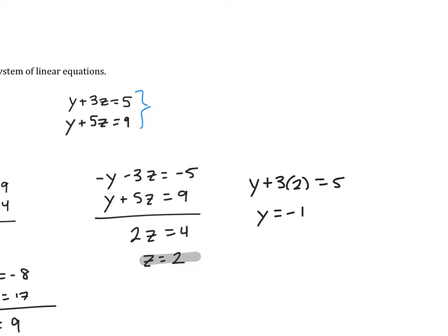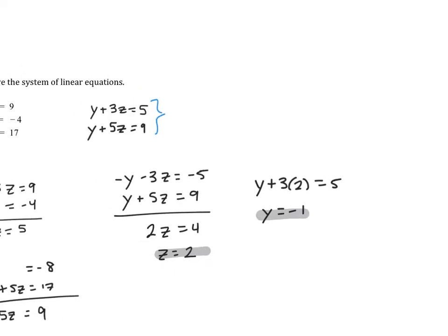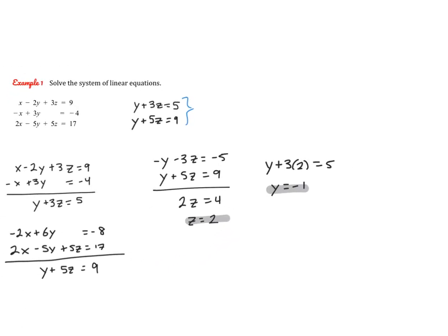And now that we have two of our variables, we can go back to our original system. And we are trying to solve for x. So I noticed that I can actually solve for x by substituting into the second equation. You can really substitute it into any of the original three, but this one will just be the least amount of work. So we can say negative x plus 3 times negative 1 equals negative 4. So we know that x is going to equal 1.